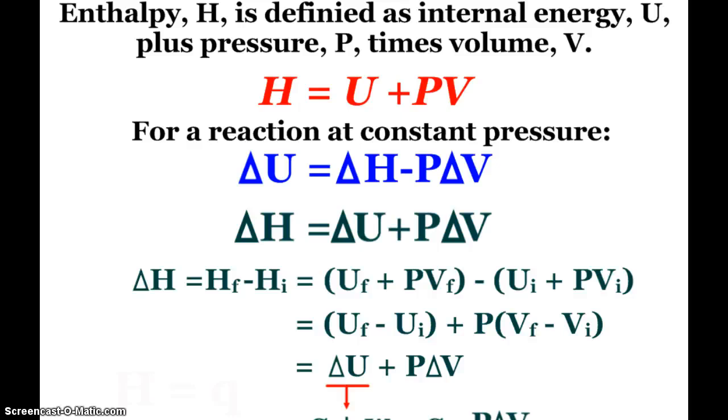So again, enthalpy H is defined as the internal energy plus pressure times volume. We saw that equation back in unit 4. So the change in internal energy, if I rearrange this equation and include the change symbol, the change in internal energy is delta H minus P delta V. If I rearrange again, I end up seeing that delta H is equal to the change in the internal energy plus P delta V.